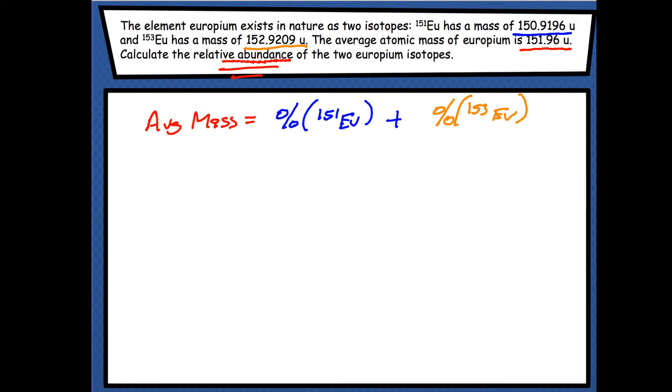So in this problem, we know the average mass that's given to us. We know the mass of this isotope, and we know the mass of this isotope. What we don't know is that percentage and that percentage.